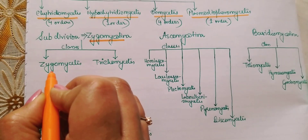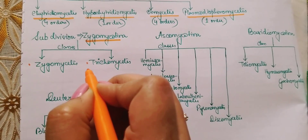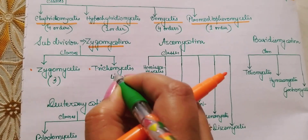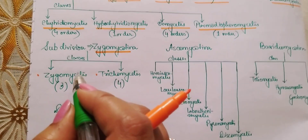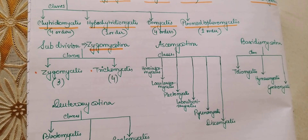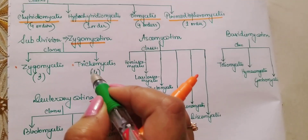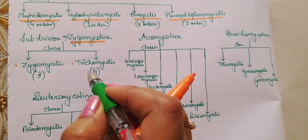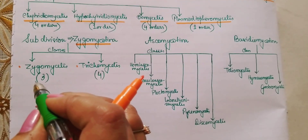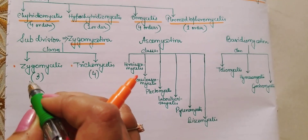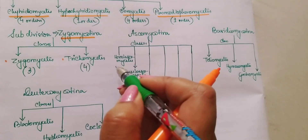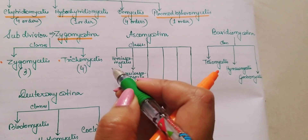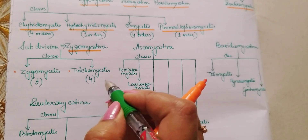Zygomycotina is divided into two broad classes: Zygomycetes and Trichomycetes. Zygomycetes has got three orders and Trichomycetes has got four orders. Members of Zygomycetes are mostly saprophytic and sometimes weak parasites, while members of Trichomycetes are commonly found in the guts of arthropods. The three orders of Zygomycetes are Mucorales, Entomophthorales, and Zoopagales. The four orders of Trichomycetes are Harpellales, Asellariales, Eccrinales, and Amoebidiales.